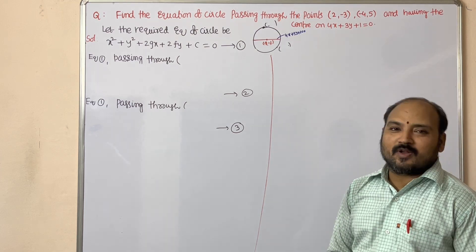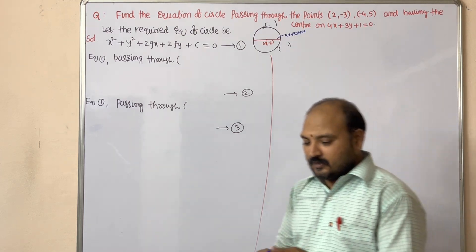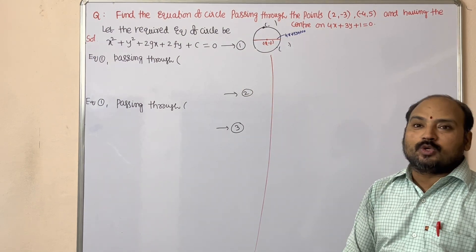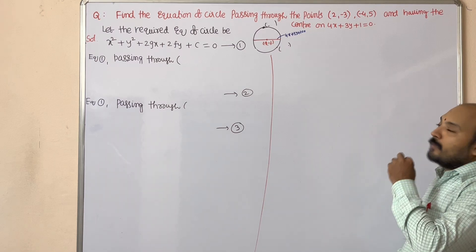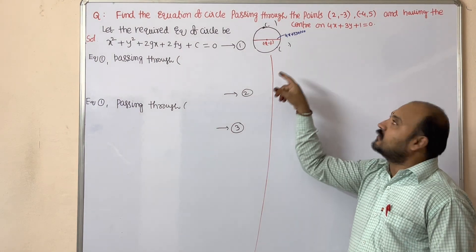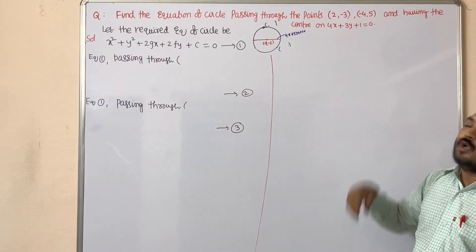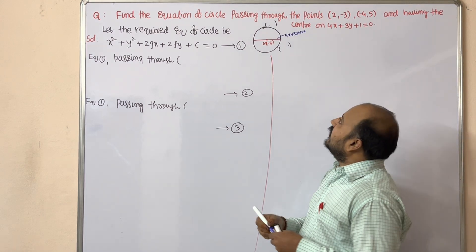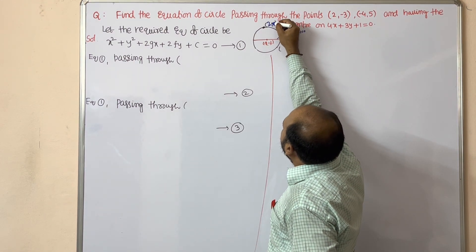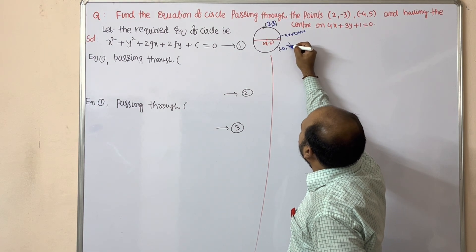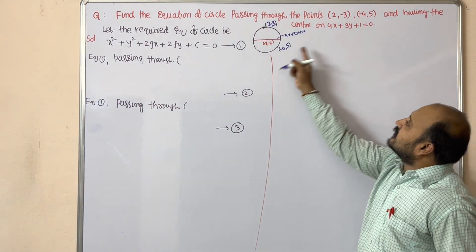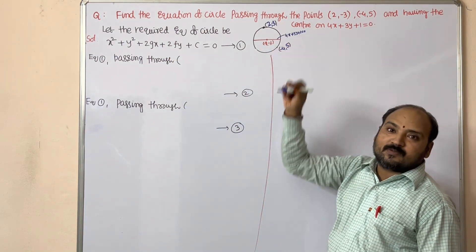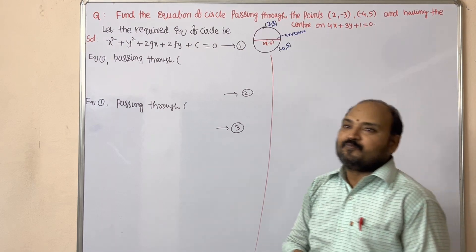The next question is also one of the seven marks possibilities in circles: find the equation of a circle passing through the points (2, -3) and (-4, 5), and having the center on the line 4x + 3y + 1 = 0. The rough figure shows the circle passing through these two points, and the center (-g, -f) lies on this line.